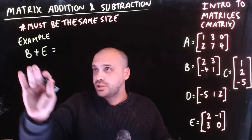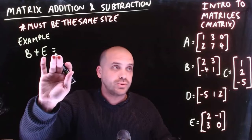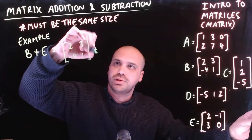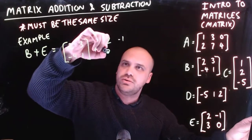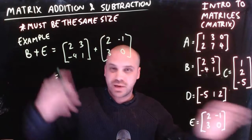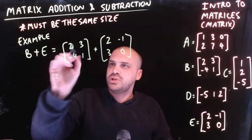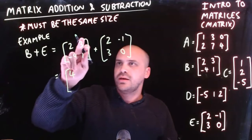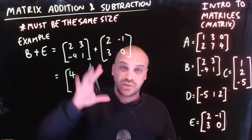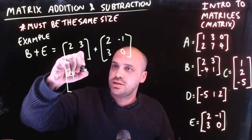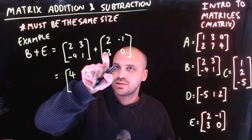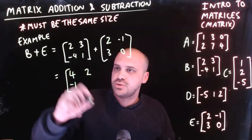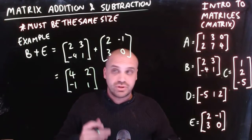Matrix B plus matrix E: we write out matrix B as [2, 3, -4, 1] plus matrix E as [2, -1, 3, 0]. Adding matrices together, we just match up our elements. 2 plus 2 is 4. 3 plus negative 1 is 2 — need to be careful with your negatives. Negative 4 plus 3 is negative 1. And 1 plus 0 is 1. That is matrix B plus E.